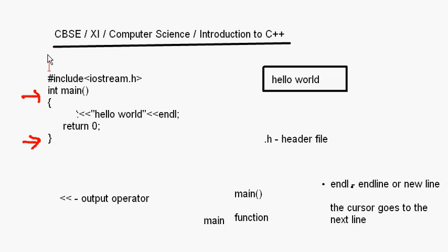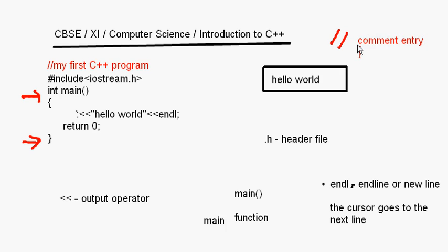Suppose I put one more statement at the beginning of this program — if I write something like 'my first C++ program', notice these two slashes I have put here. Two slashes at the beginning of a line means it is a comment entry. Comment entries are just for documentation purposes and will not be read by the compiler. The C++ compiler will just ignore this line — it is only for us to understand what the program is doing. Whatever lines you want the compiler to ignore, you can put in a comment statement.